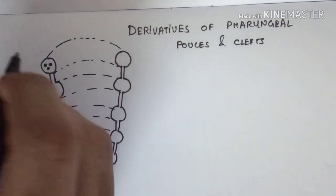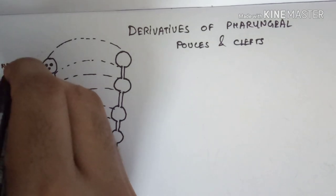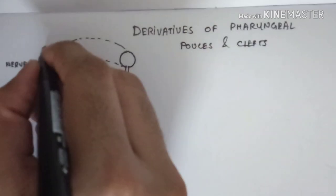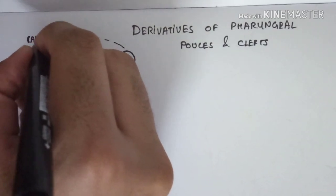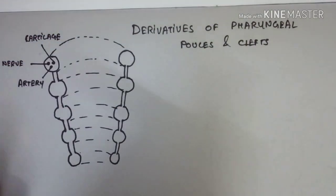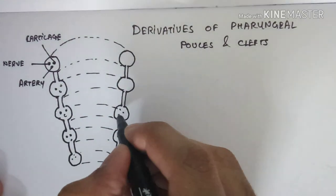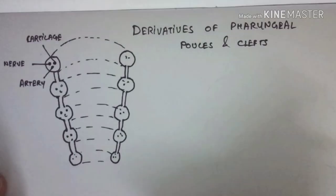There are three contents within each arch. First is the nerve, which gives specific nerves to the respective pharyngeal arch — for example, the mandibular and maxillary nerve for the first arch, the facial nerve for the second, and the glossopharyngeal for the third. Then there is the artery and the cartilage. The cartilages form bones and ligaments of the head and neck, such as the skull, larynx, and trachea.